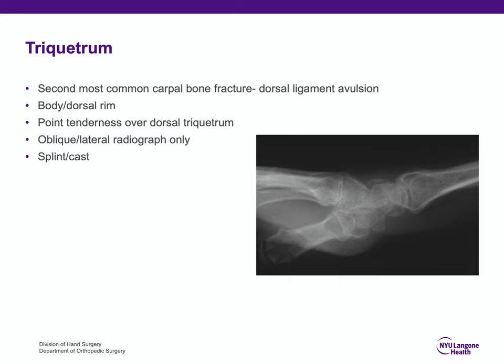The triquetrum is the second most common carpal bone fracture after scaphoid. It's often a dorsal ligament avulsion — the dorsal radiolunate triquetral ligament attaches to the dorsal aspect of the triquetrum, and the triquetral dorsal avulsion fracture is thought to be a ligament avulsion from that ligament. A body fracture is not as common and generally occurs with a perilunate dislocation. For a triquetrum fracture, there will be point tenderness over the dorsal triquetrum, and the fracture is not seen on PA or often not on oblique x-ray — it's oftentimes only seen on the lateral x-ray as an avulsion of the triquetrum.